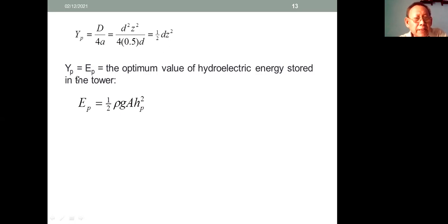So Yp = 1/2 DC², where Yp = Ep. Ep is the optimum value of hydroelectric energy storage in the tower. The equation is Ep = 1/2 ρGA HP².